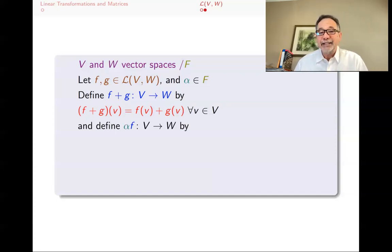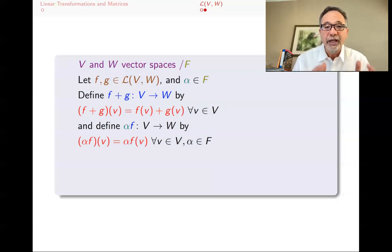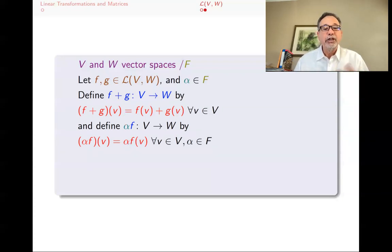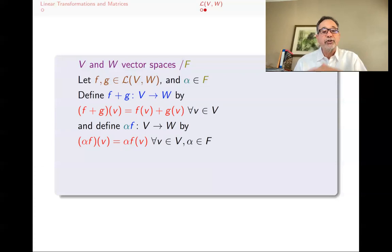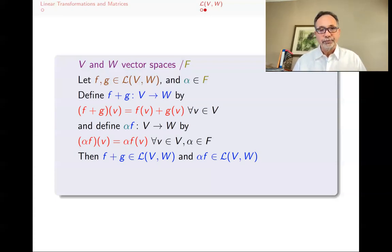We also define scalar multiplication: alpha times F is a map from V to W where (αF)(v) = α · F(v). So I'm telling you how to map elements of V to W. These are well-defined functions, but you do need to show they are actually linear transformations — it's not that difficult. So you take two linear transformations, use this addition, and get another linear transformation. You take a linear transformation and scalar multiply, and you get another linear transformation. That means F plus G and alpha F are also elements of Script L(V, W), which now has addition and scalar multiplication.